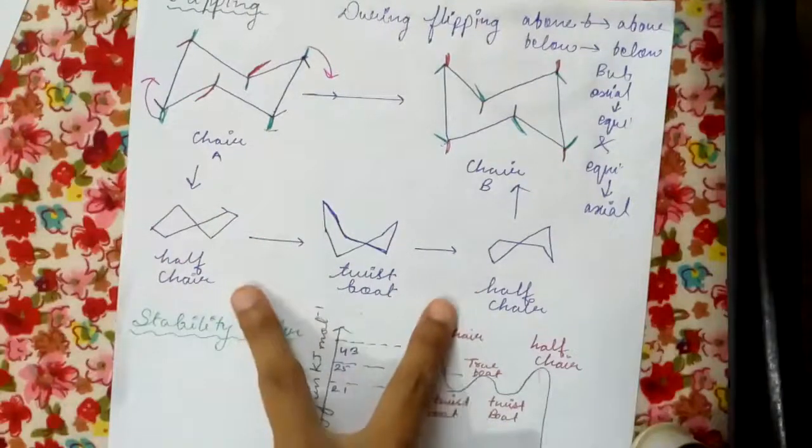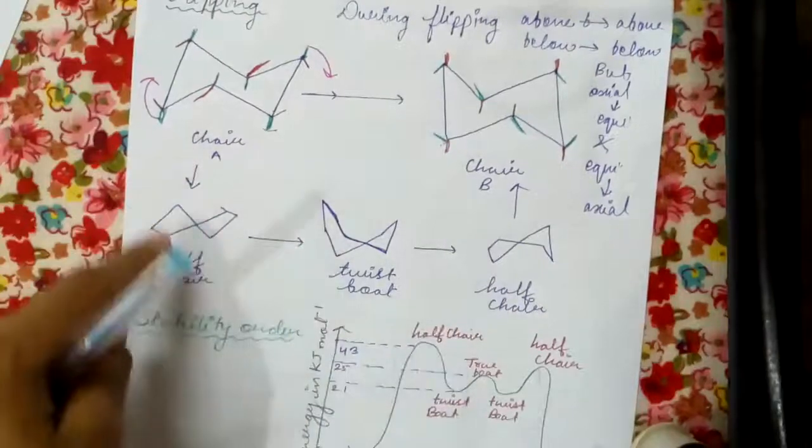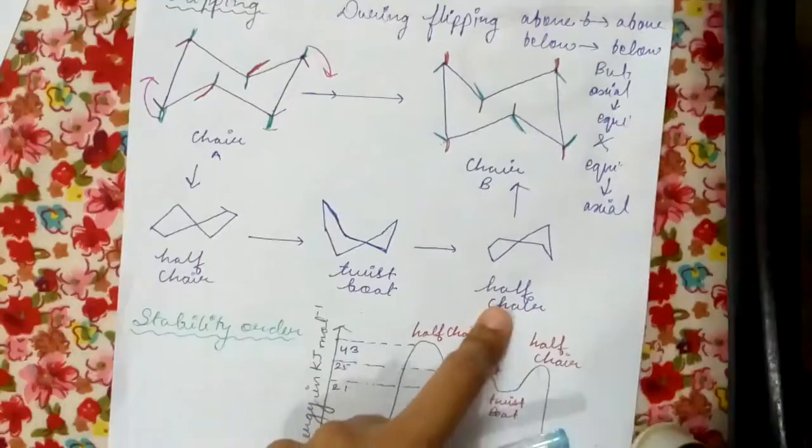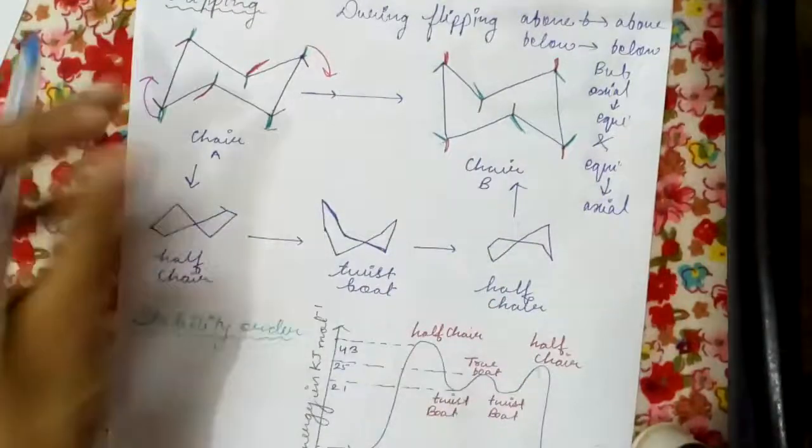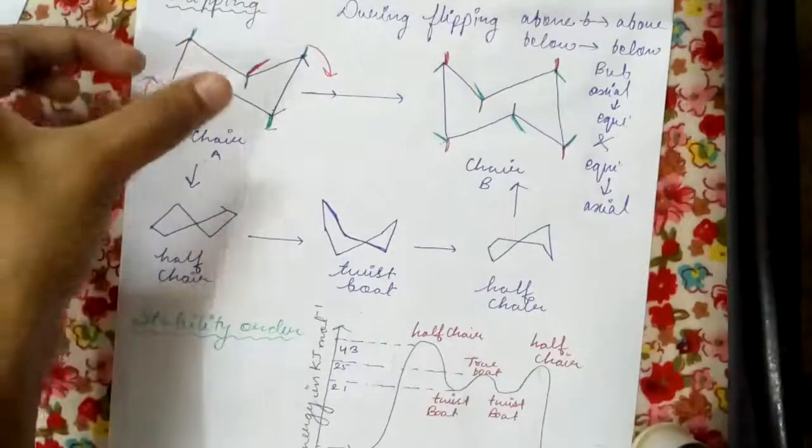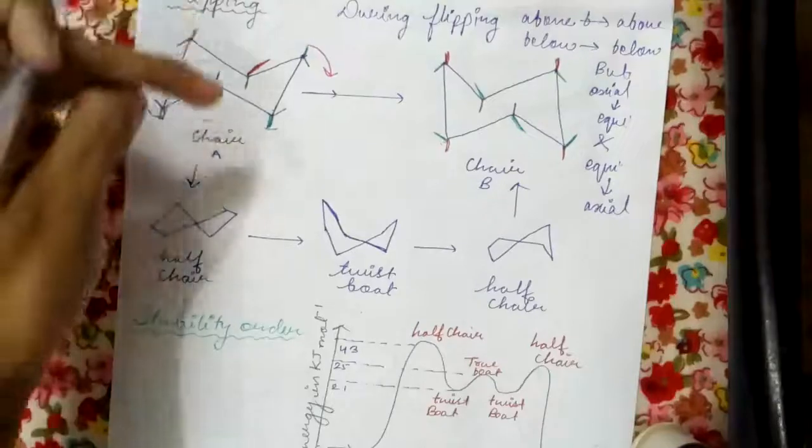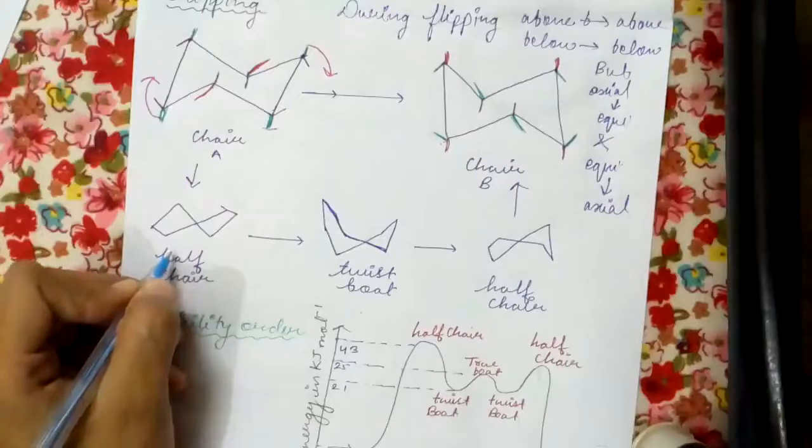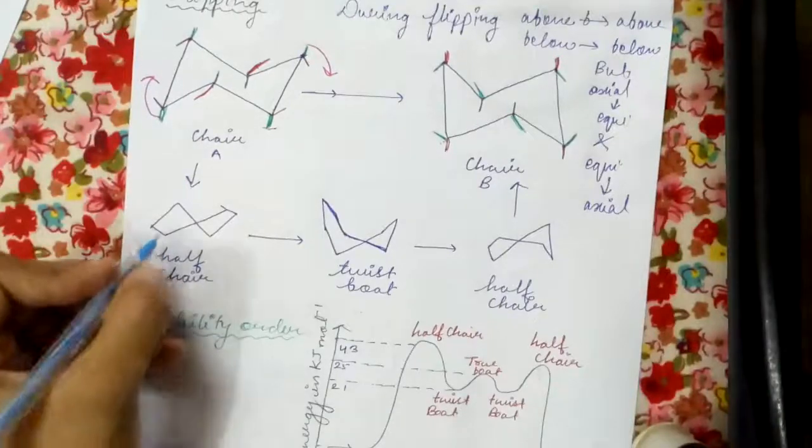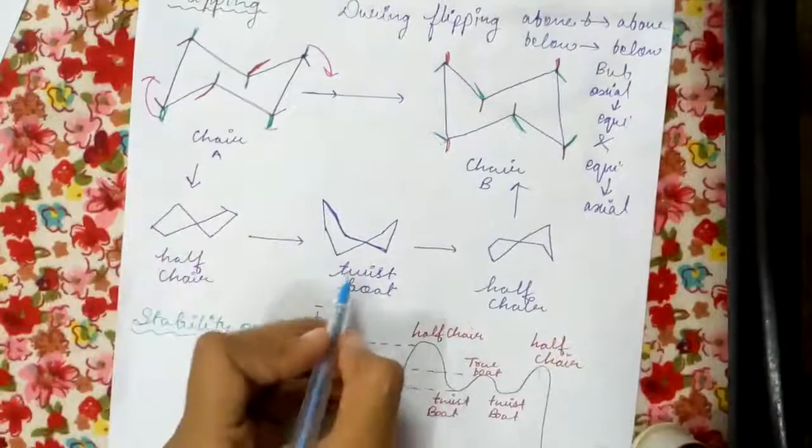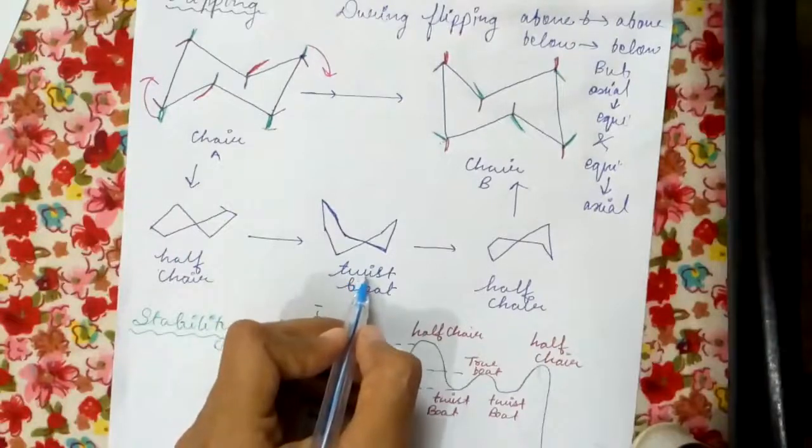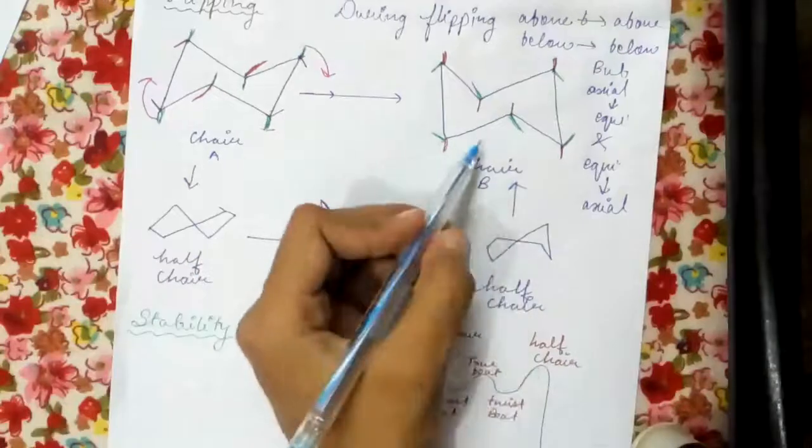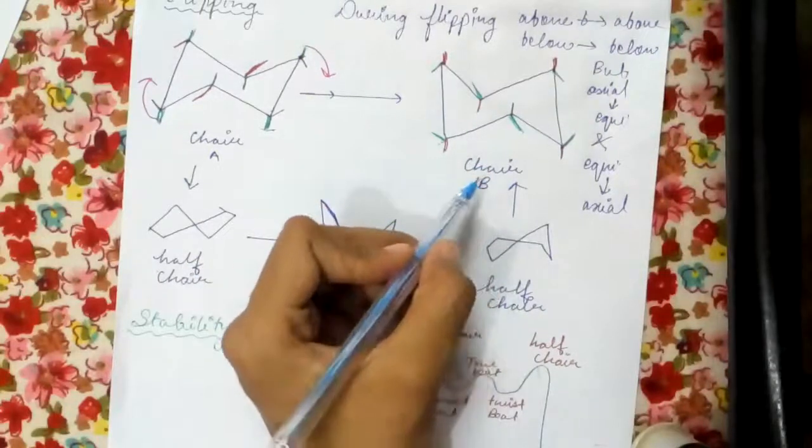During this transformation there are three more structures which are achieved, or transition states we can say. The first is half chair, twist boat, and again half chair. Firstly what happens is the ring slowly tries to flip - this part tries to come down, so this structure is being achieved. This is called half chair. Then it transforms to twist boat, next is half chair, and it finally reaches the next chair which we are going to achieve after flipping.